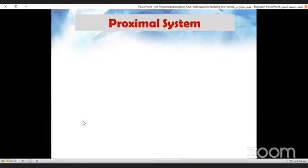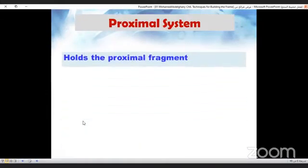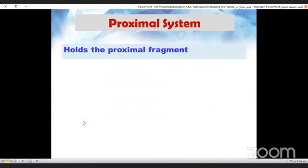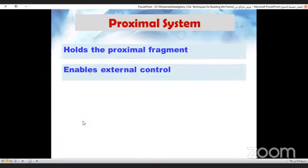We will start by the proximal system. It holds the proximal fragment, enables external control, and is composed of at least two rings.